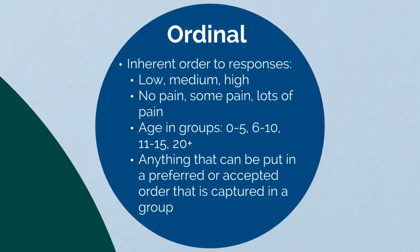Ordinal variables have an inherent order to responses: low, medium, high; no pain, some pain, lots of pain. Age collected in groups is ordinal: 0 to 5, 6 to 10, 11 to 15, or 20 plus. Anything that can be put in a preferred or accepted order and is captured in a group is an ordinal variable.